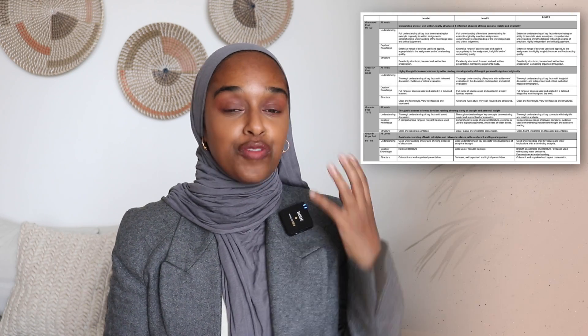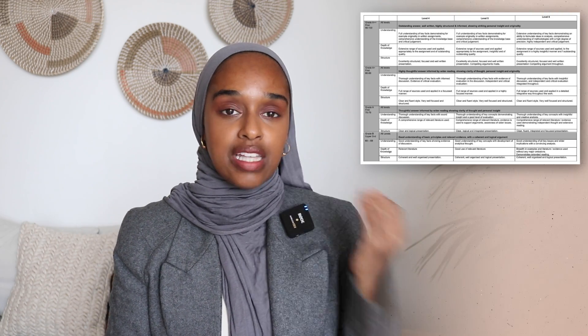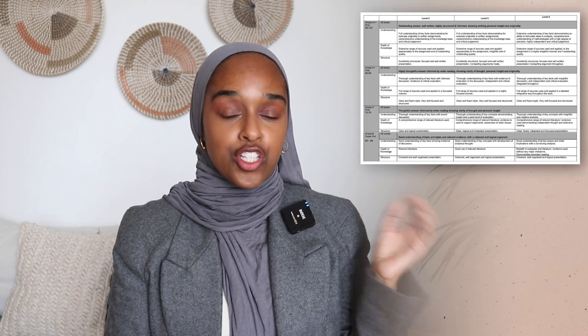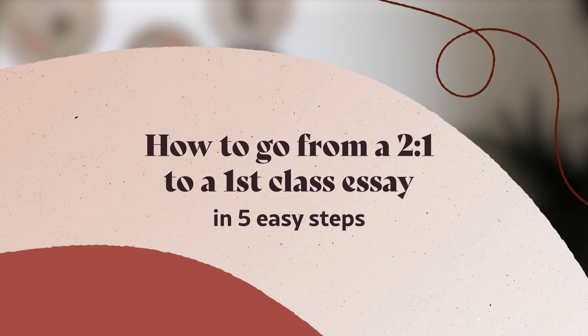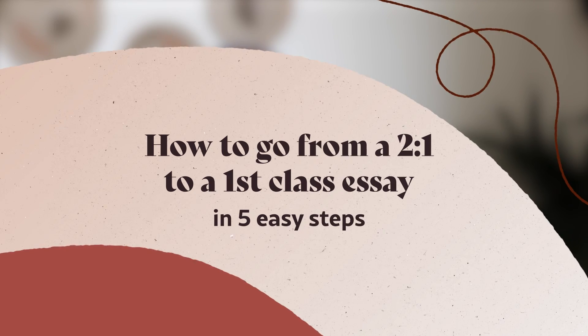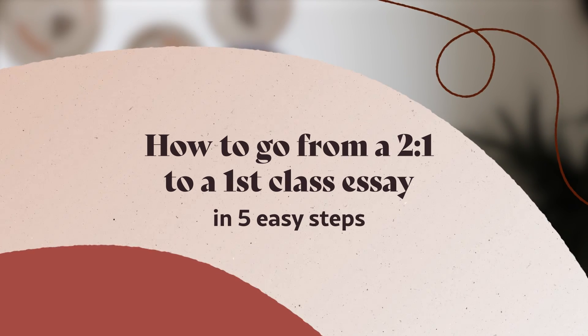This is the University Mark Scheme, and there are five ways that you can change your essay using AI to take you from a 60% average to over 70%. So going from a 2:1 to a first by just changing a few things in five parts of your essay. In today's video I'm going to be going through what those are and showing you exactly how to do it.